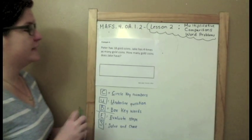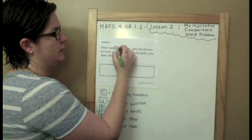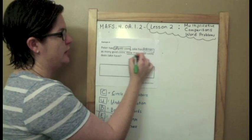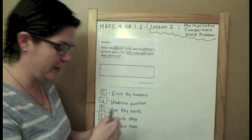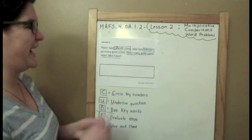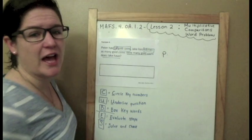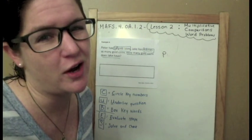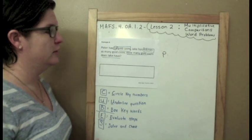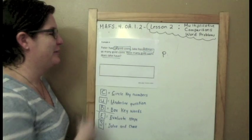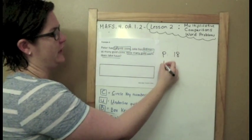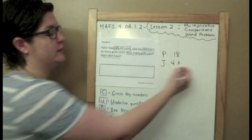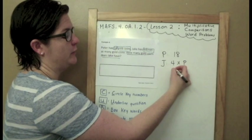Example 4: Peter has 18 gold coins. Jake has 4 times as many gold coins. Question: How many gold coins does Jake have? So I need to figure out how many gold coins Jake has. Let me see what I know. I know that my boy Peter, and yes I'm referring to Peter Pan, Jake from Jake and the Neverland Pirates - you might be in fourth grade but you know you know what I'm talking about. Peter has 18 gold coins. Jake has 4 times as many gold coins, so 4 times what Peter has. And how many coins does Peter have? Peter has 18. So let's rewrite that: 4 times 18.